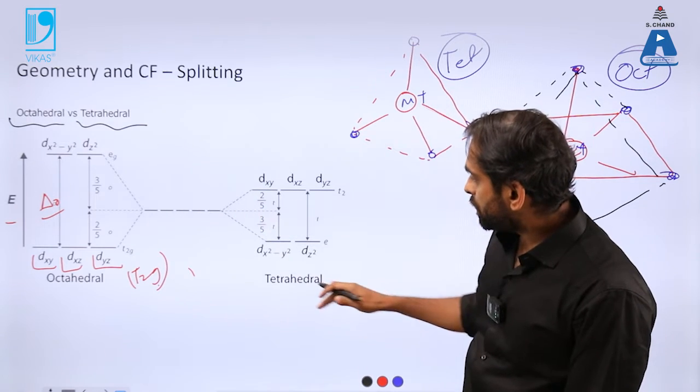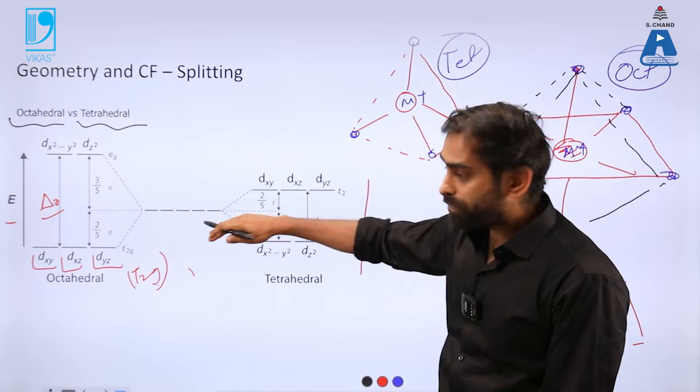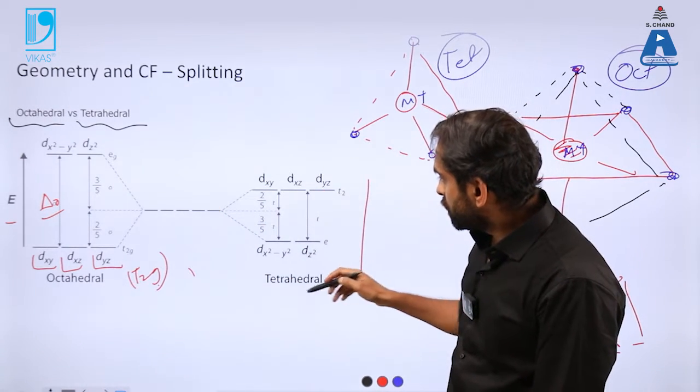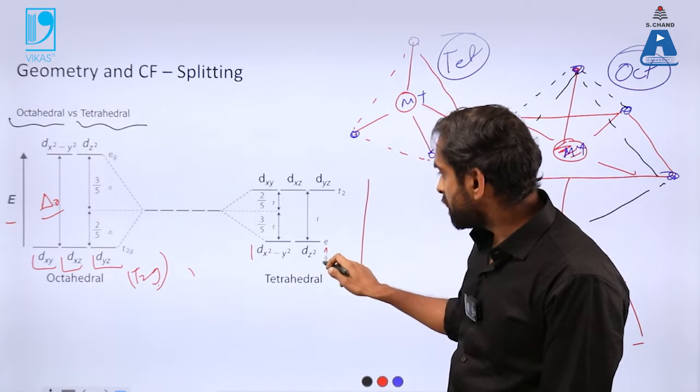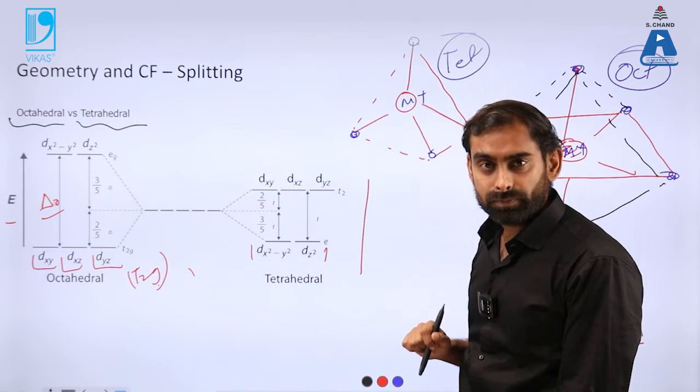And when they got splitted, you can see here x square minus y square and z square have come lower. So that's something contrasting - in case of octahedral you had eg levels having higher energy.